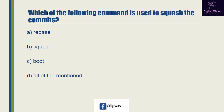Next question options are: option A is 'rebase', option B is 'squash', option C is 'boot', and the last option is all of the mentioned. The right answer will be rebase, because in Git there are two main ways to integrate changes from one branch into another: the merge and the rebase.